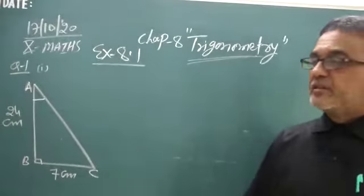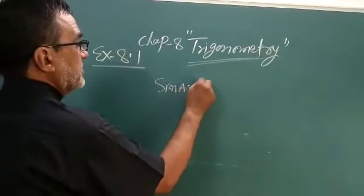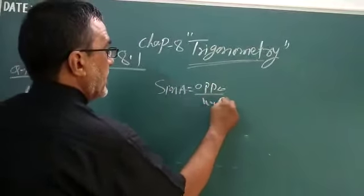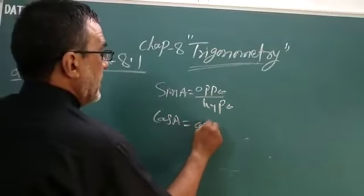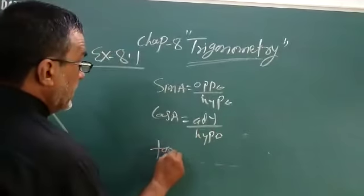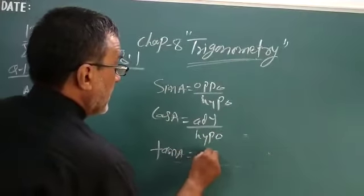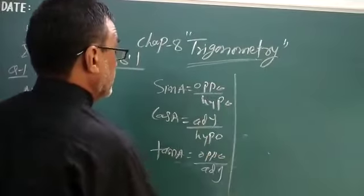There are 6 trigonometric ratios. First number, I again repeat you. Suppose sine A. So sine means what? Opposite upon hypo. Cos A for angle, adjacent upon hypo. Tan means opposite upon adjacent, right?